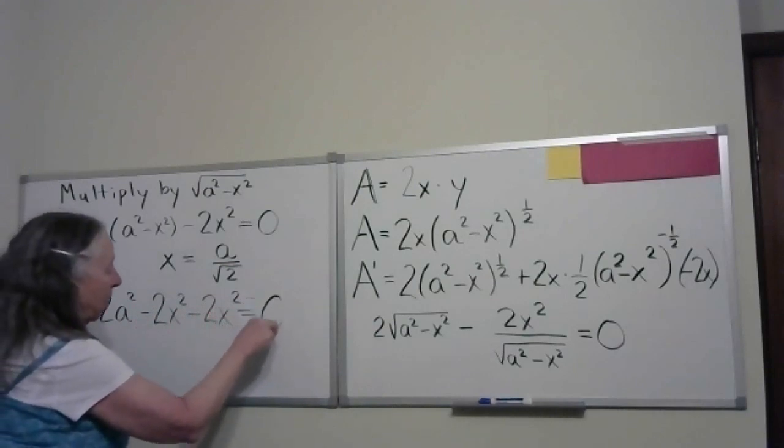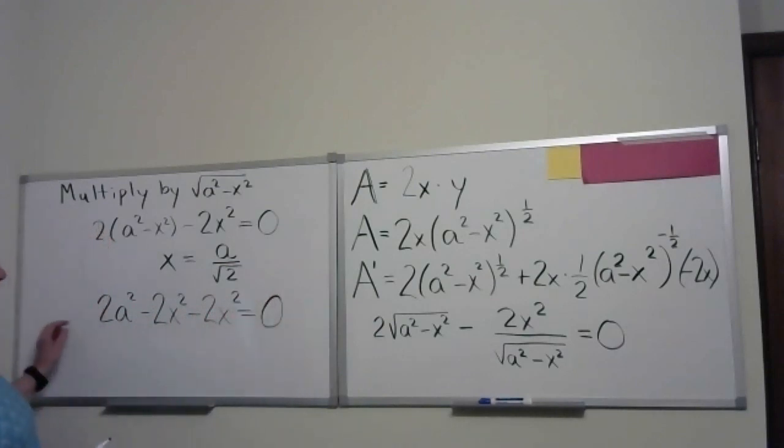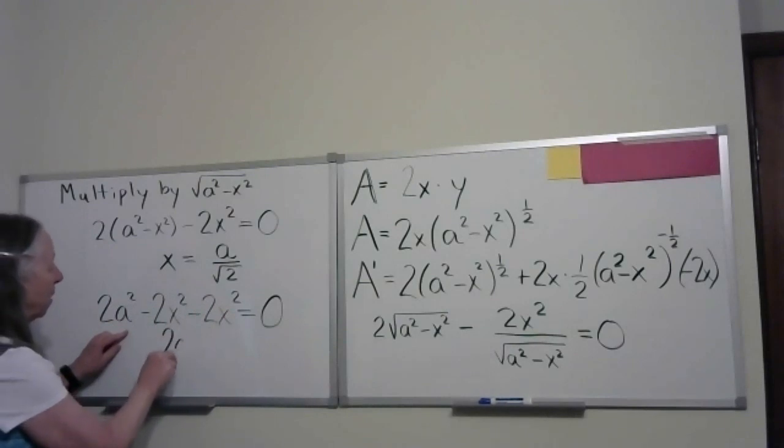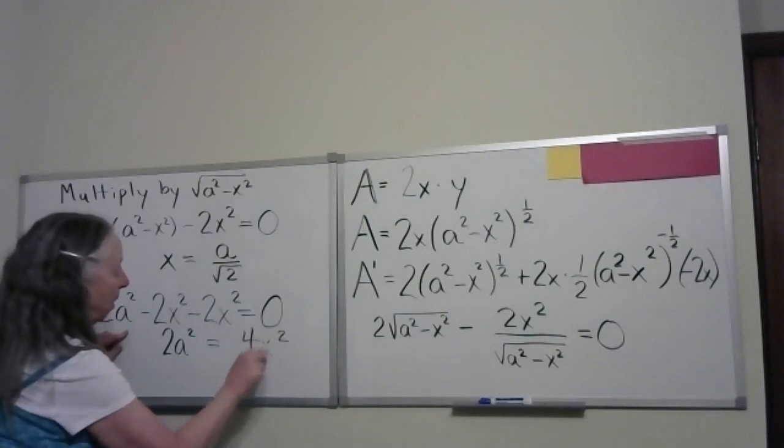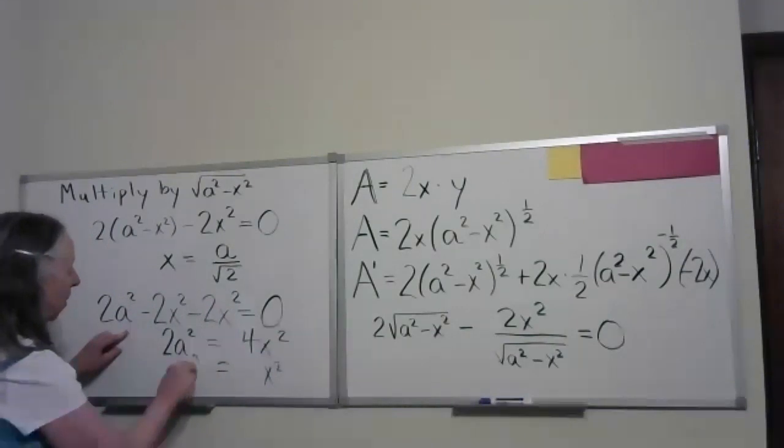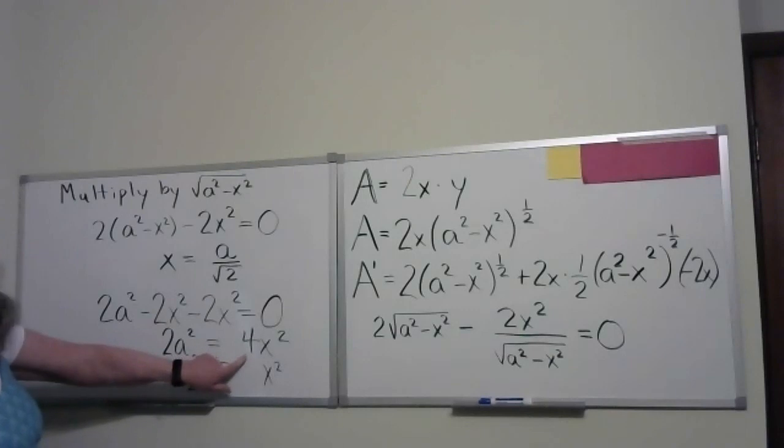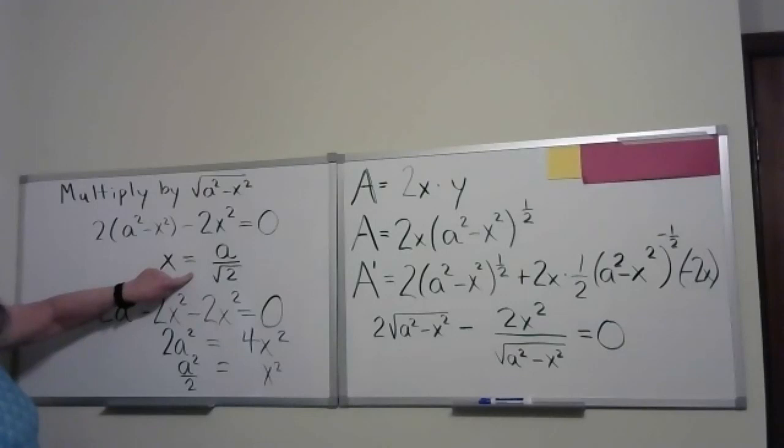I'm going to multiply out, so I get 2a squared minus 2x squared minus 2x squared equals 0. So I have 2a squared equals 4x squared. So x squared equals a squared over 2. Because I divide both sides by 4. So x equals a over the square root of 2. Everybody good with a over the square root of 2 for x?